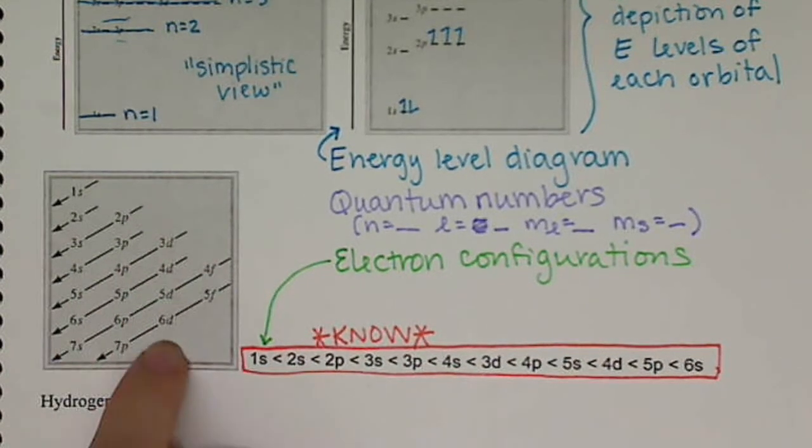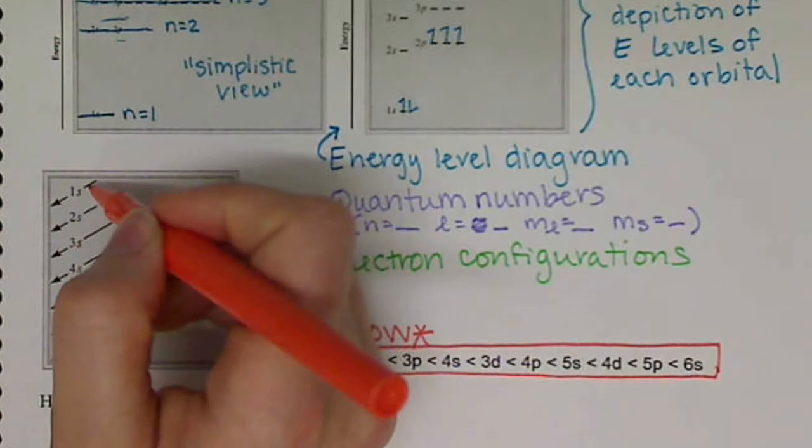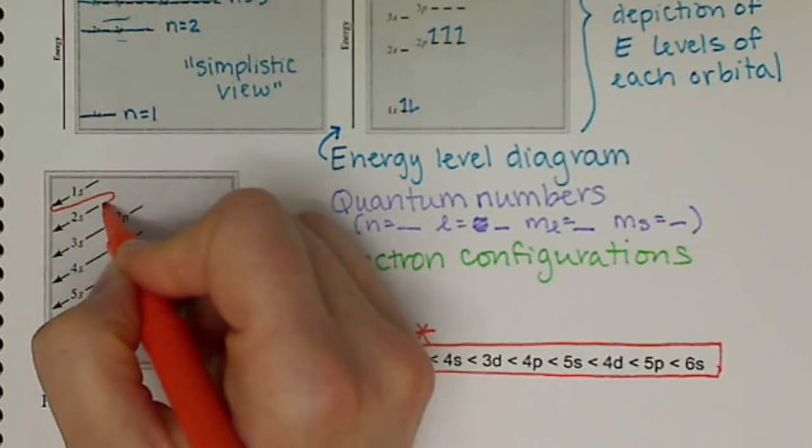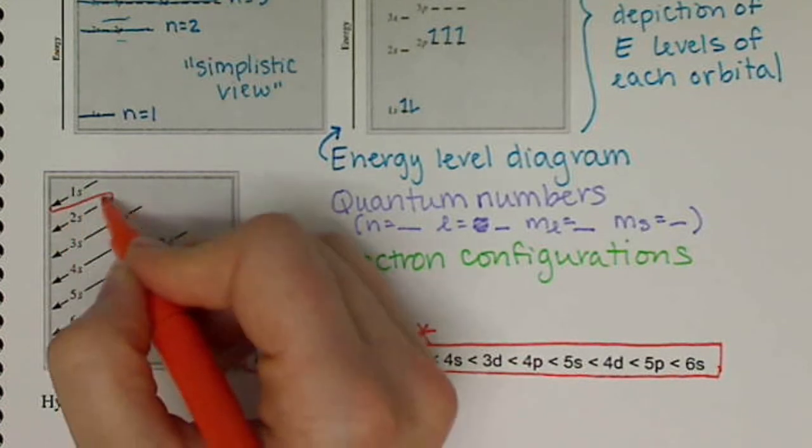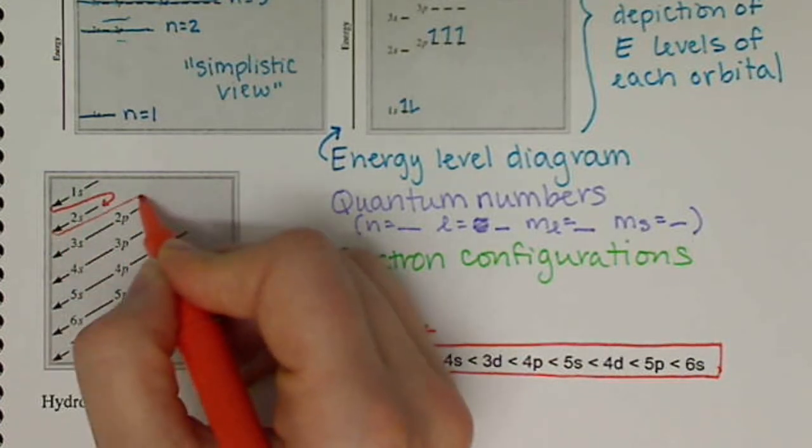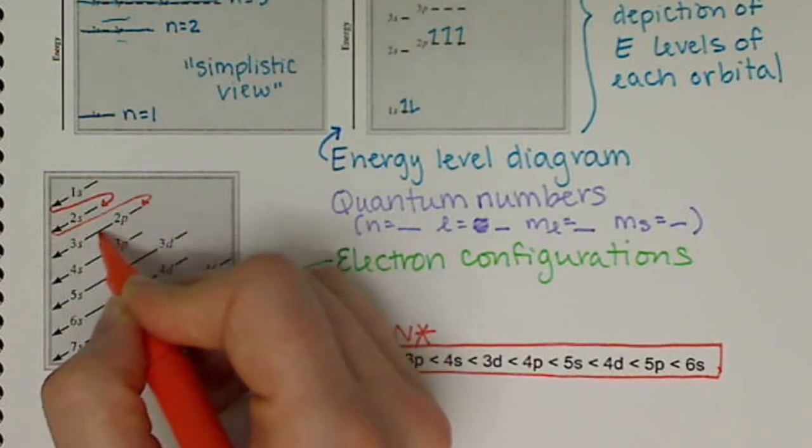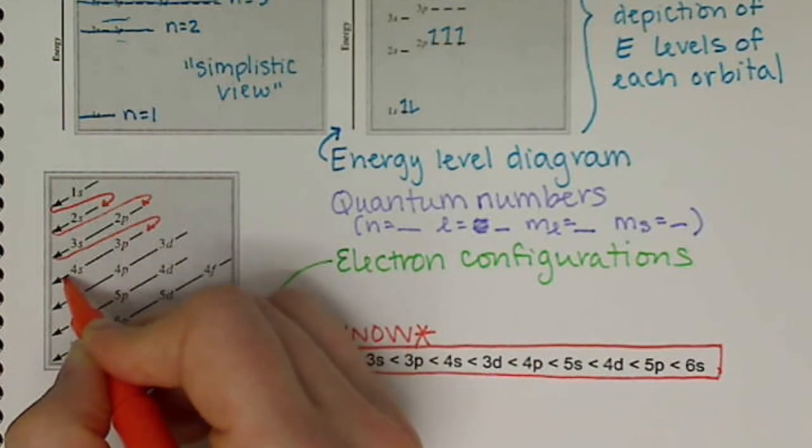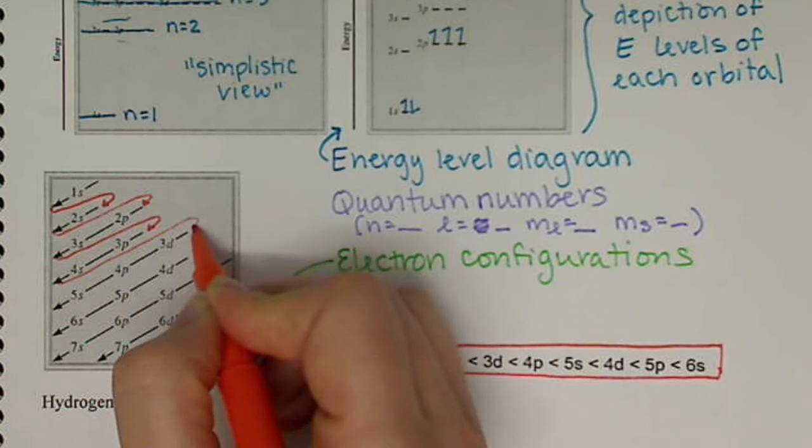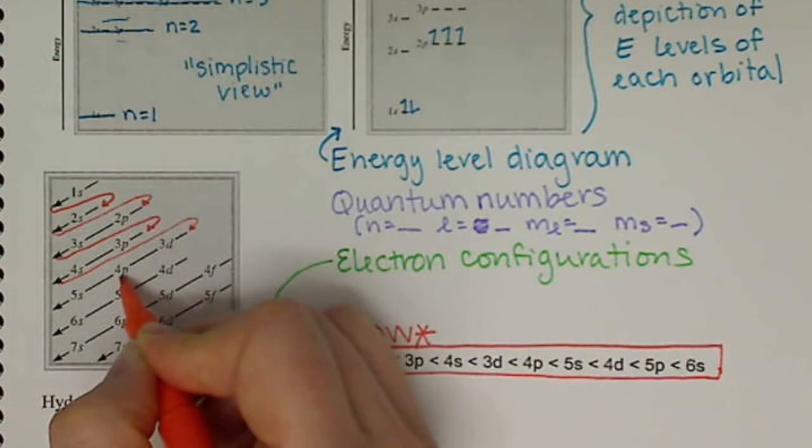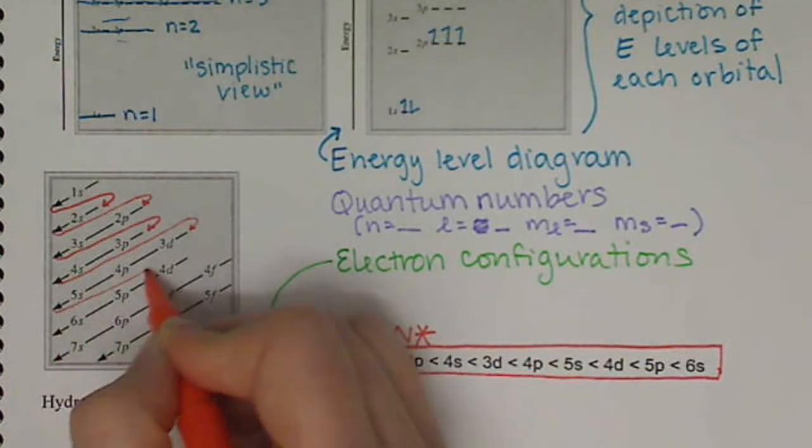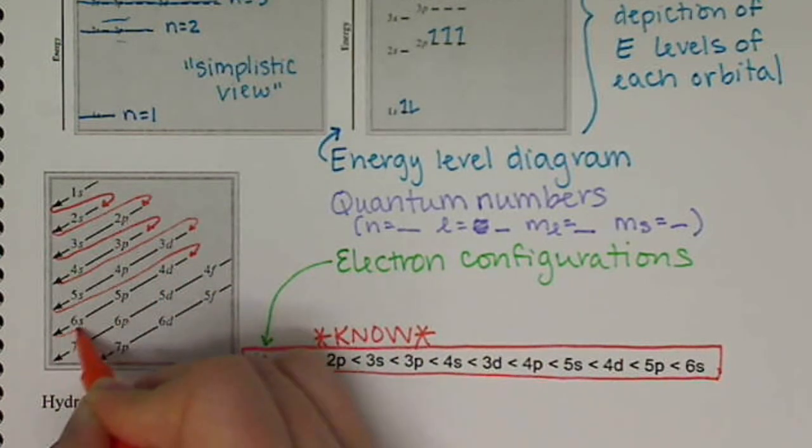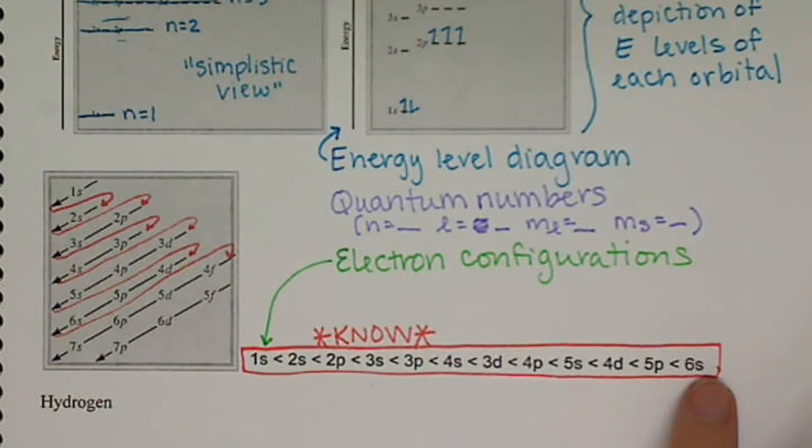If you list those across, then what you do is you draw down, then you go back up. So we have 1s, 2s, 2p, 3s, 3p, 4s, 3d, 4p, 5s, 4d, 5p, 6s, and that's where we leave off here.